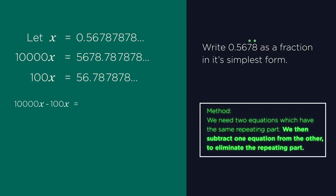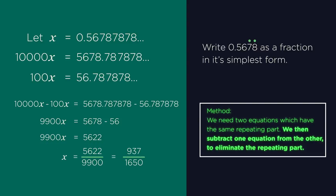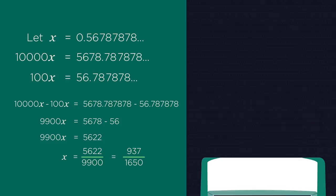Now we can do ten thousand minus one hundred equals 5678.78 minus 56.78. So nine thousand nine hundred x equals 5678 take away 56, which equals five thousand six hundred and twenty two. So a little bit of rearranging. Divide both sides by nine thousand nine hundred. And we get x equals 5622 divided by 9900. And again, we can check this on our calculator.